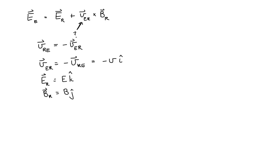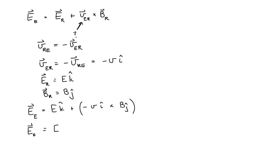So now we have everything we need to solve this problem. We can say that the electric field as measured by Earth is given by the electric field of the rocket ship, which we said is E K-hat, plus the cross product — and I'll just put this minus sign here — this is the cross product of the velocity vector and the magnetic field vector. So the electric field is equal to the magnitude of the electric field K-hat, minus the product of the speed of the rocket ship, the magnetic field measured by the rocket ship, and the cross product of the I-hat and J-hat unit vectors.